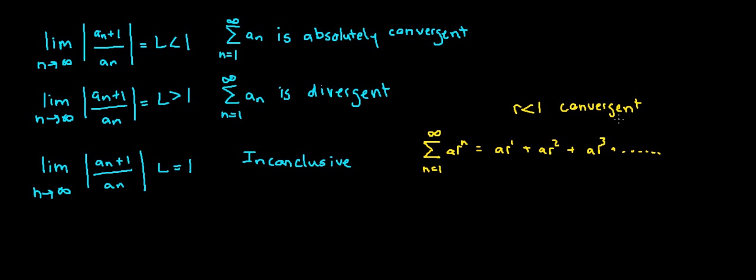What the ratio test does is basically use this idea and apply it to things that are more complicated, where convergence and divergence is not so obvious. So the idea is to figure out what the common ratio is as n goes to infinity, as the terms go towards infinity, infinite many terms, what does that common ratio approach if there is a common ratio.